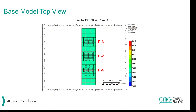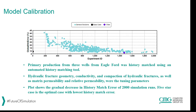This is the top view of the base model. You can see there are three wells with unsymmetrical half lengths, which was used first to get a good history match to calibrate the model.